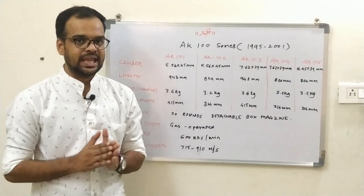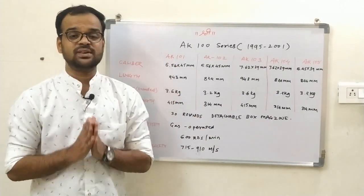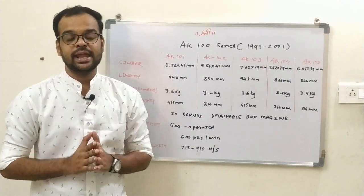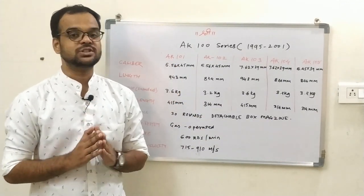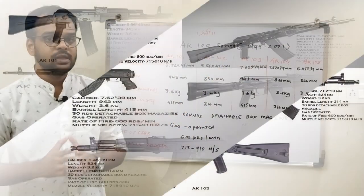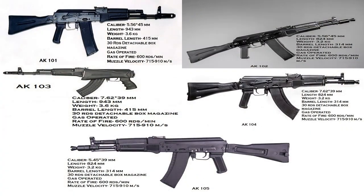The fourth weapon is the AK-100 series, which includes the AK-101, AK-102, AK-103, AK-104, and AK-105. These firearms all share a 30-round detachable box magazine and are gas-operated, capable of firing 600 rounds per minute with a muzzle velocity ranging from 715 to 910 meters per second.